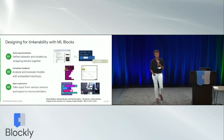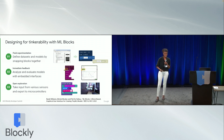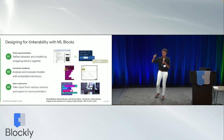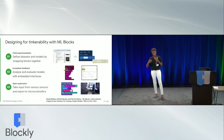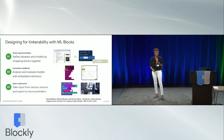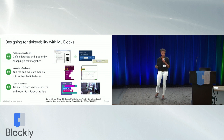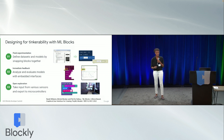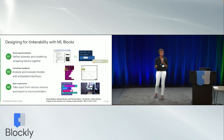Here's what designing for tinkerability looks like with ML Blocks. First, fluid experimentation: if you've ever used a Jupyter notebook, it's amazing and powerful but a little hard to get started with. With ML Blocks, you just snap blocks together to set up a dataset, remove a class or move a set of data if you want. Second, immediate feedback: the blocks have buttons on them — you finish defining a model with the purple block, hit the train button, and an interface pops up where you can watch it train in real time, helping you analyze and evaluate your model.